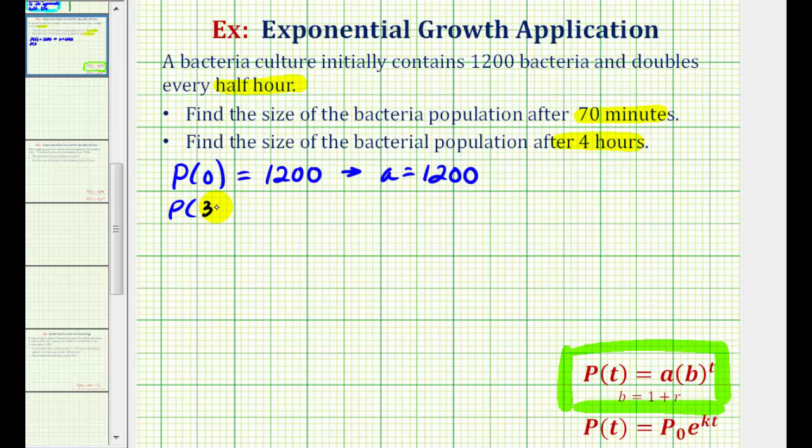So if the culture doubles every half an hour, half an hour is equal to 30 minutes, P of 30 would have to be equal to two times the initial amount, or two times A, which in this case would be 2,400.